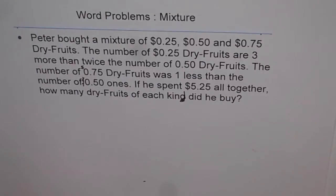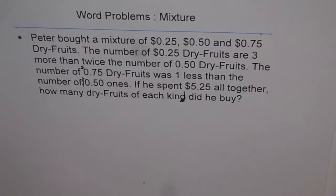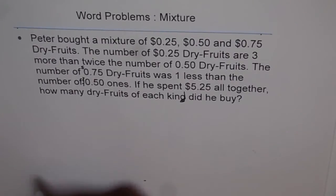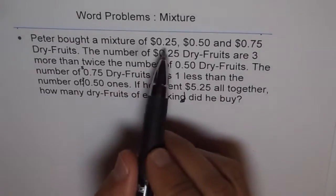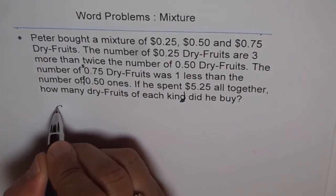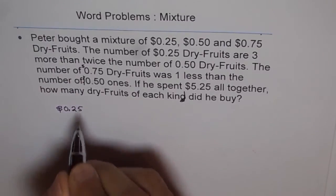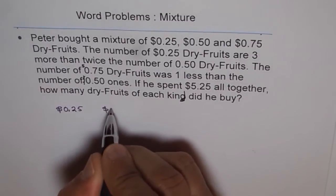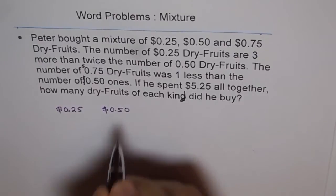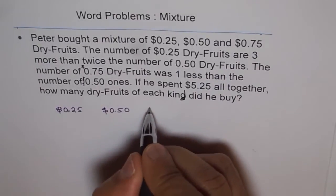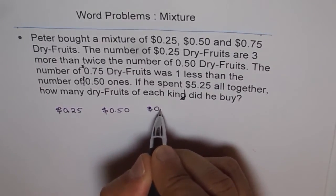Now, it's kind of confusing. So what we will do is, we'll try to place it in a way so that we can understand it better. Let's read it again and translate it into our own words. There are three kinds of mixtures: one costing $0.25, another $0.50, and the third $0.75.